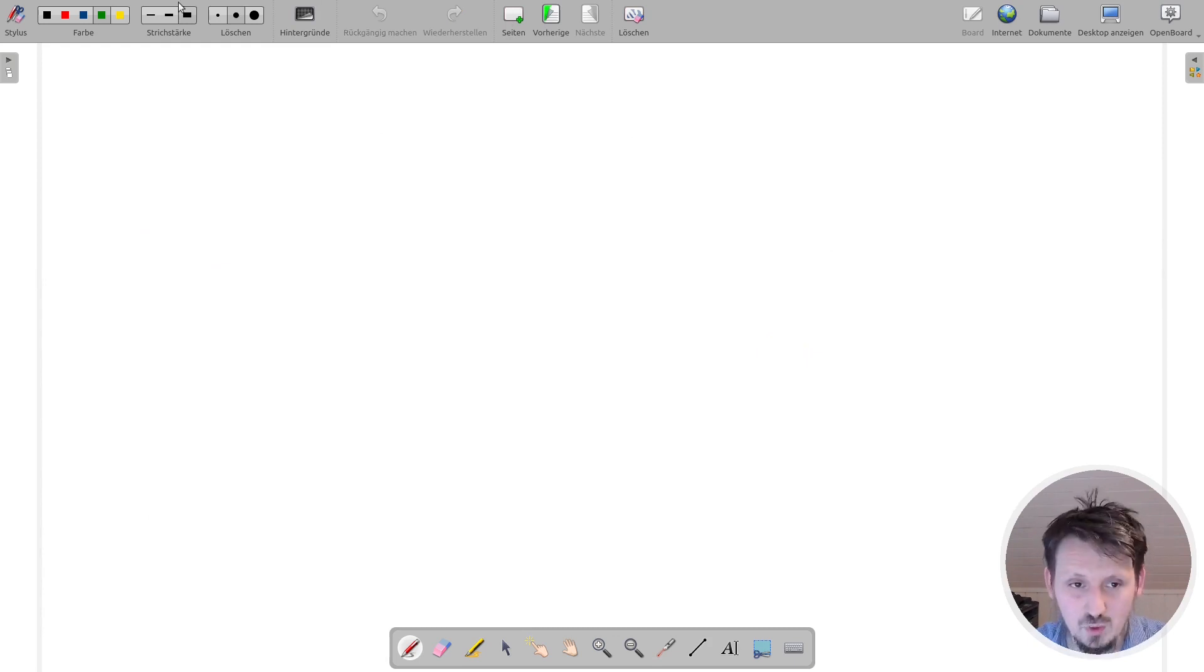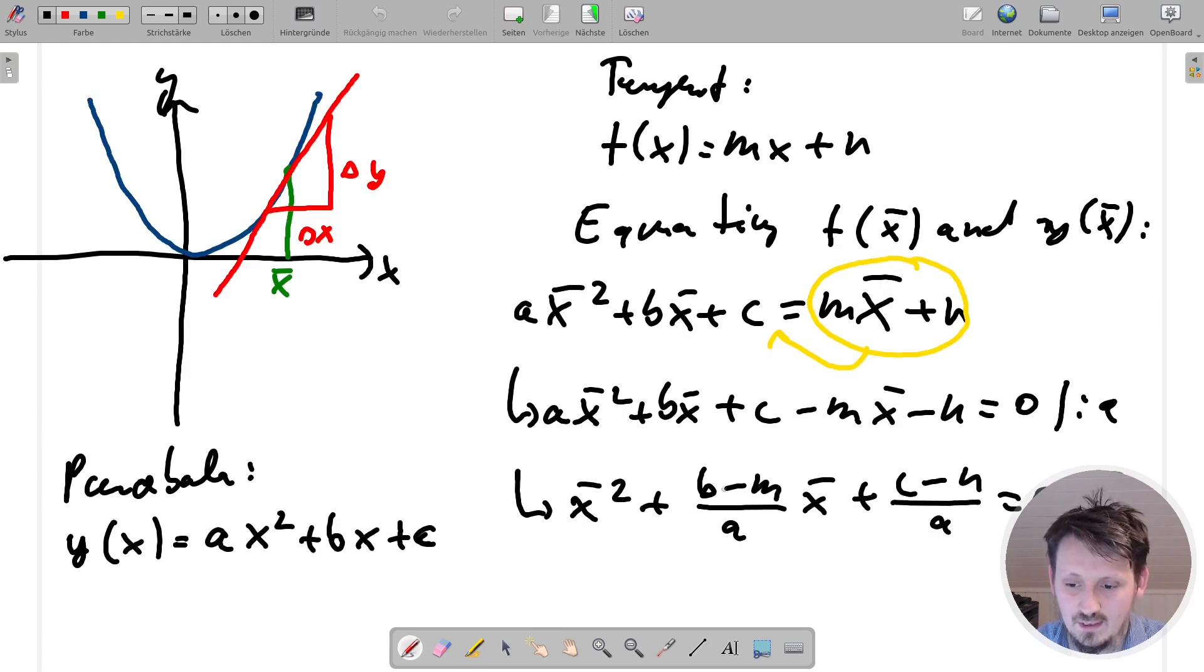Okay. And now maybe we can create a new page. And then what we would actually use, we will use now PQ formula to solve that now. And then we can identify this here, of course, as as P. And this here would be our Q in combination with this plus, of course.